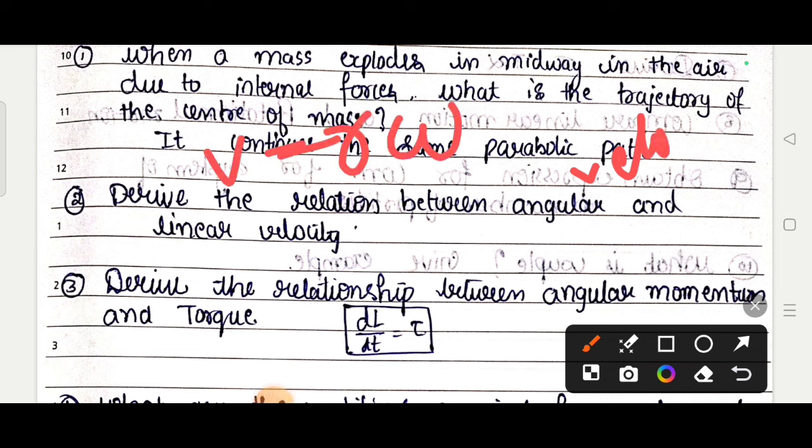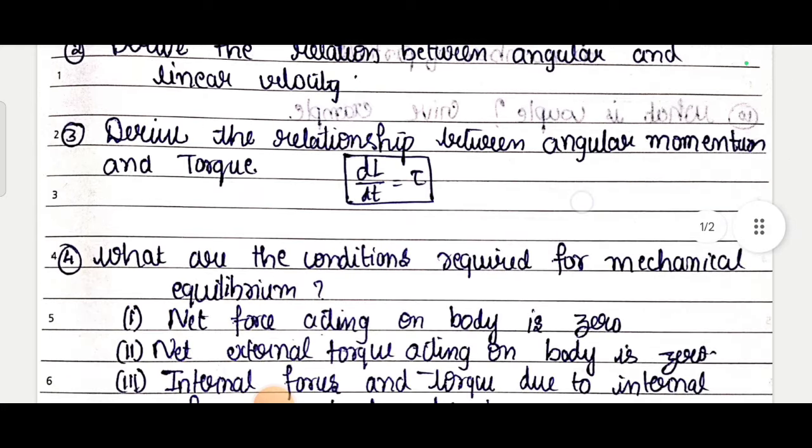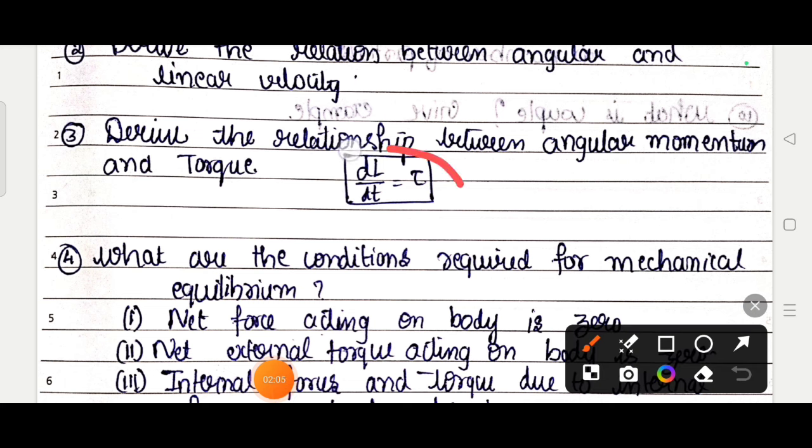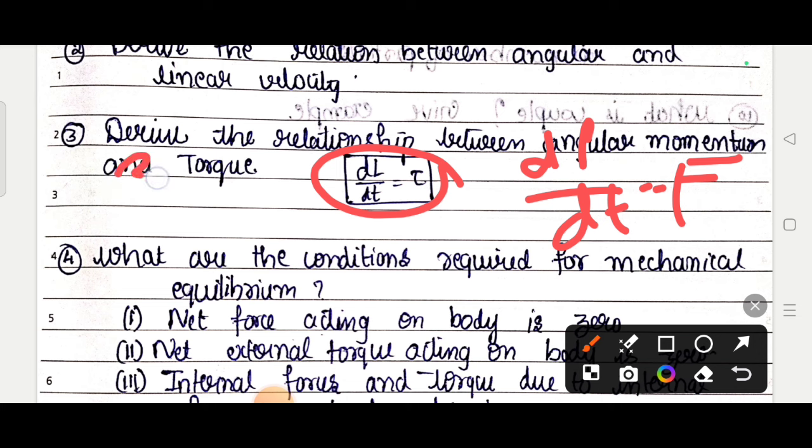Third question: derive the relationship between angular momentum and torque. So dl/dt equals tau - prove this. That is, rate of change of angular momentum equals torque. This is very much similar to rate of change of momentum equals force, Newton's second law. The same consequence in rotational motion - this is also important for 3 marks.